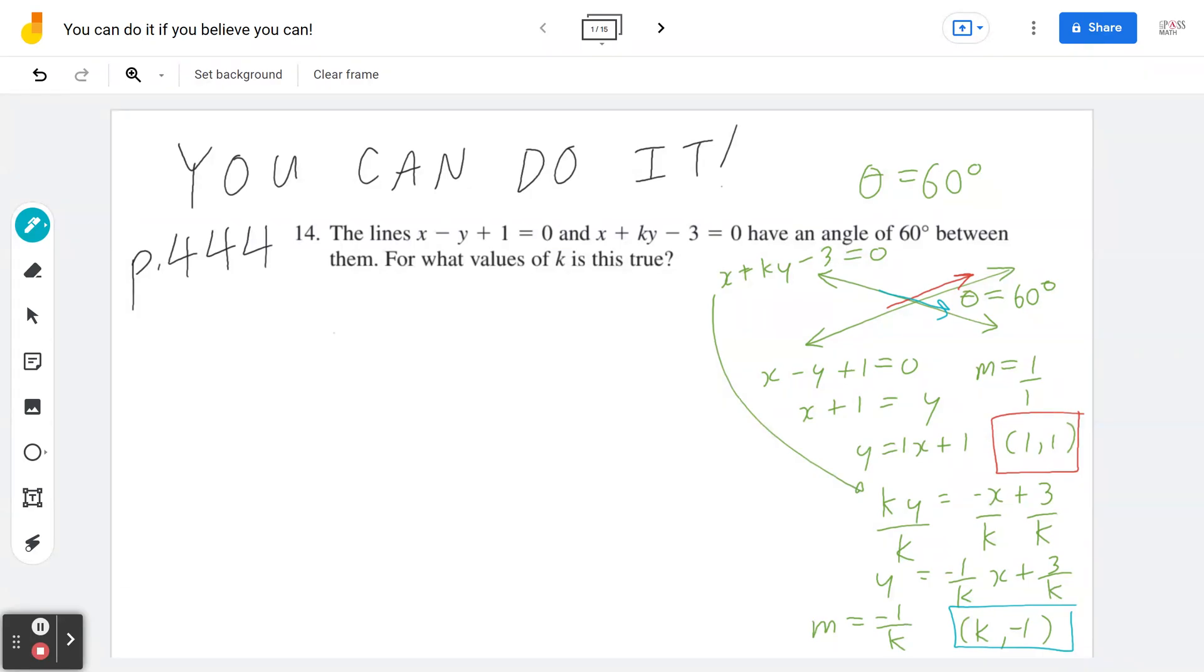The key is, what is k? Think about dot product. By definition, cosine theta equals a dot b divided by the magnitude of a times the magnitude of b. In this context, I take the dot product of (1, 1) with (k, -1), and I divide this by the magnitude of (1, 1) times the magnitude of (k, -1).